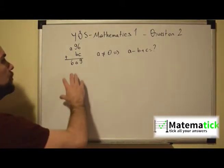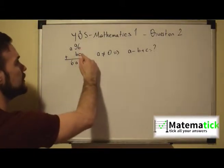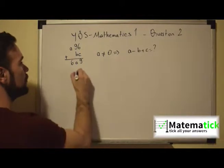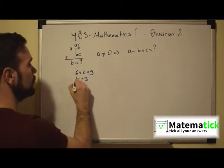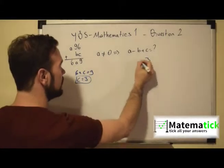Now what is the first thing that we can see here? We know that 6 plus C is equal to 9. So if 6 plus C is equal to 9, then C must be equal to 3. So the first number we found.